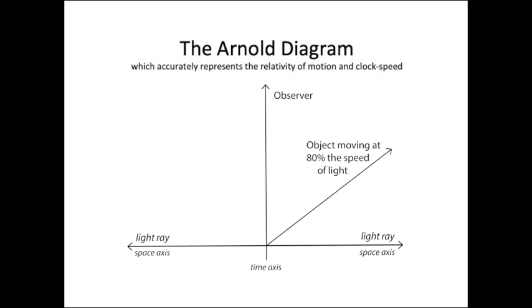In this diagram, light rays are shown moving along the space axis with zero clock speed while an object with mass, which does move in time, is portrayed as moving at 80% of the speed of light relative to an observer treated as being at rest.